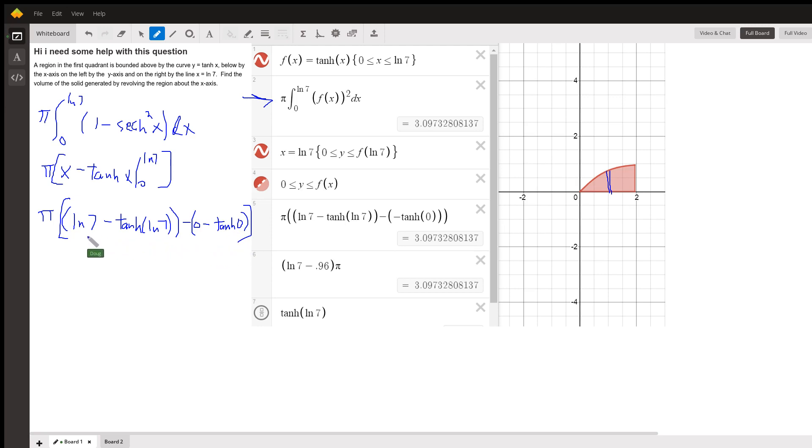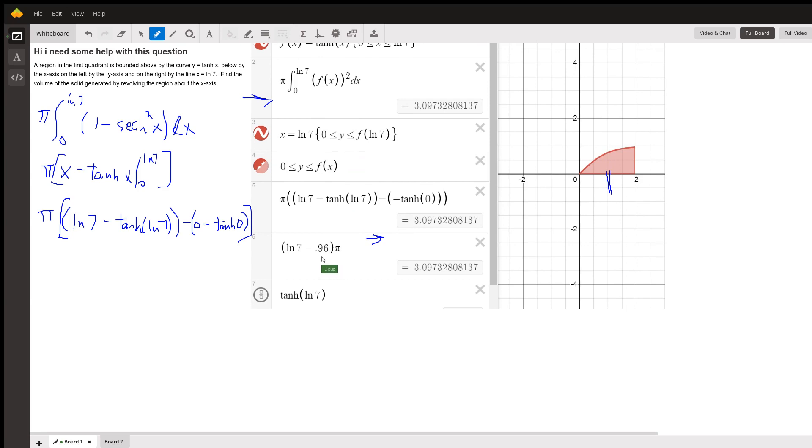If you have to evaluate this, and by the way, here's a possible answer right here. If I raise this screen up just a little bit, you can see that I rewrote that as ln of 7 minus 0.96. We got the same answer.